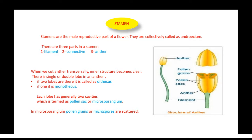One anther contains two lobes and each lobe contains two microsporangia, so in total an anther contains four microsporangia. The microsporangia contain a large number of microspore mother cells which later develop into mature pollen grains, that is, microspores.